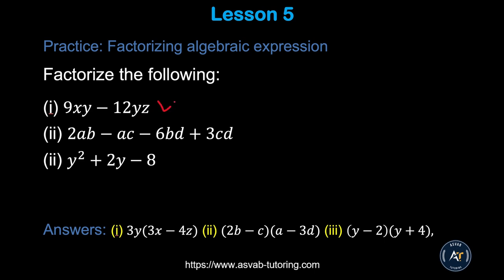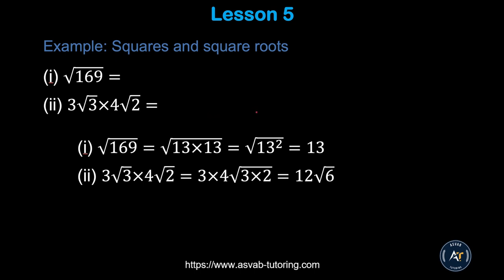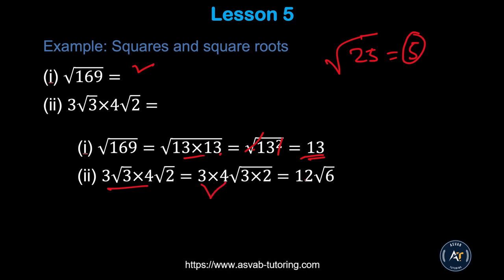There are practice problems — try them yourself and make sure you get the correct answers. Next, we'll learn how to find the square root of a number. The square root of 25 is 5 because 5 times 5 is 25. For 169: 13 times 13 is 169, so the square root is 13. When a square root and a square are both present, they cancel out. When multiplying square roots, multiply the numbers outside and combine the terms inside the square root.